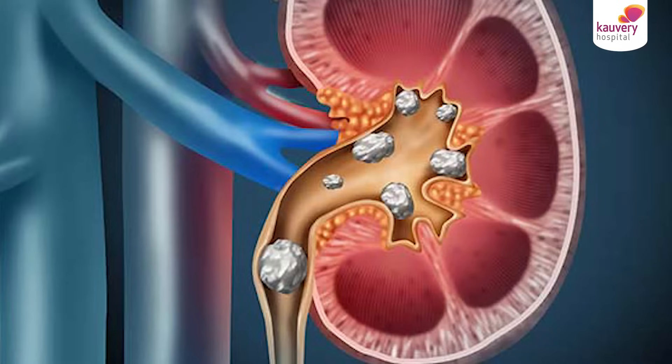So, why do we get stones in kidneys or the urinary system? The most common cause is dehydration — inadequate water intake. Some patients have metabolic abnormalities like primary hyperoxaluria or excess uric acid production. Others have anatomical abnormalities of the urinary tract.